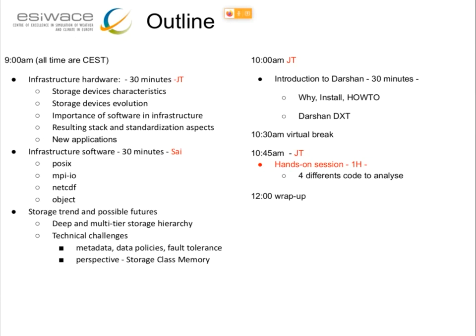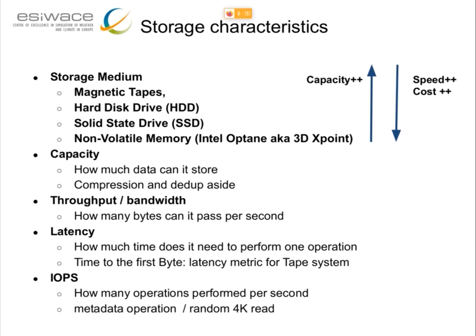Let's start with the hardware infrastructure session. If we look at the storage characteristics, we have, roughly speaking, four different kinds of storage. The purpose is not to be super detailed — it's more to give you an overview. There is magnetic tape, hard drive, solid-state drive, and the most recent technology is non-volatile memory.